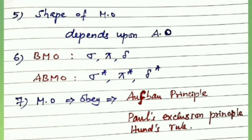The shape of molecular orbitals depends upon the shape of the combining atomic orbitals. The bonding molecular orbitals (Nb) are represented by sigma, pi, and delta. The anti-bonding molecular orbitals (Na) are represented by sigma star, pi star, and delta star.